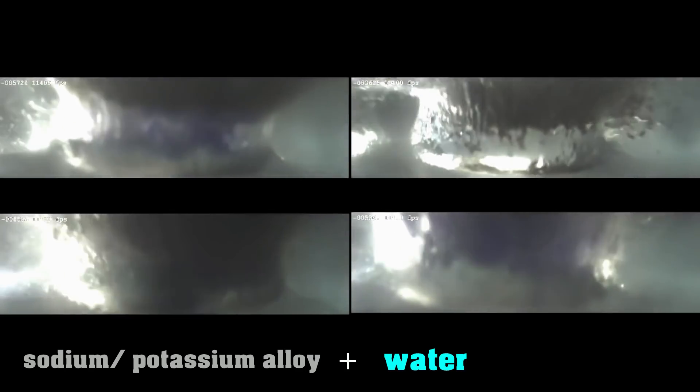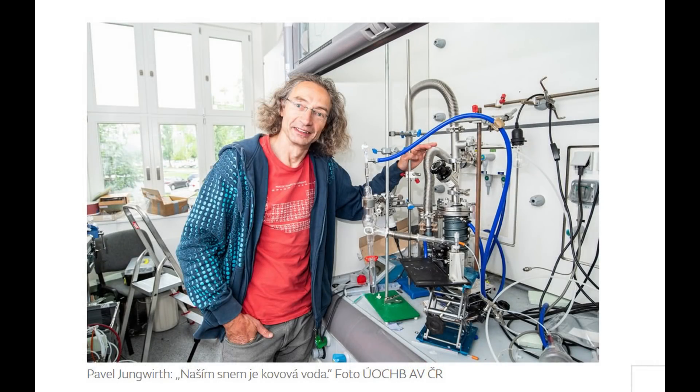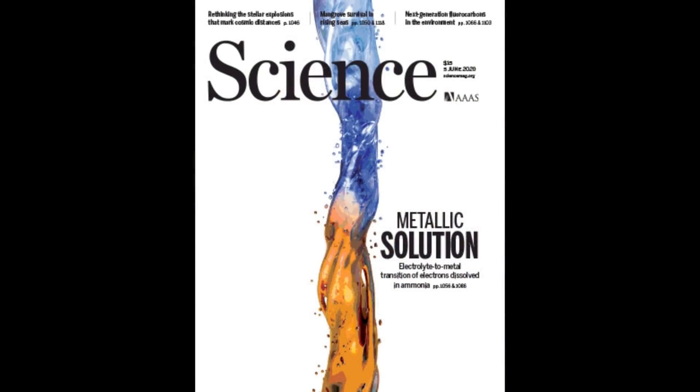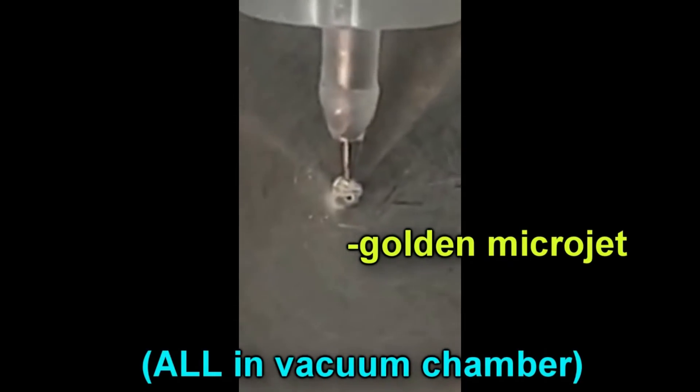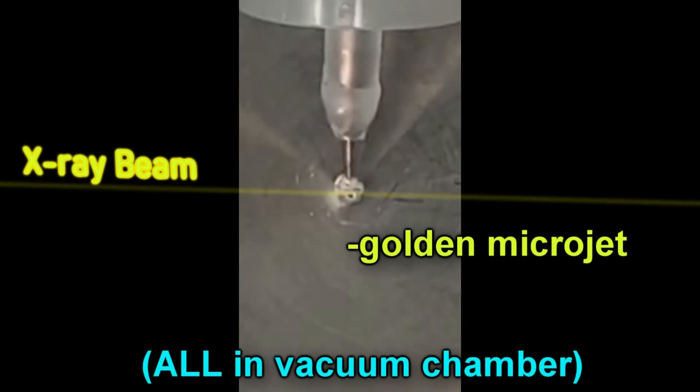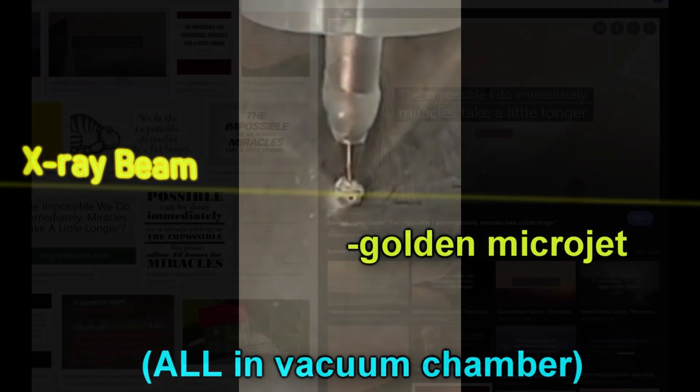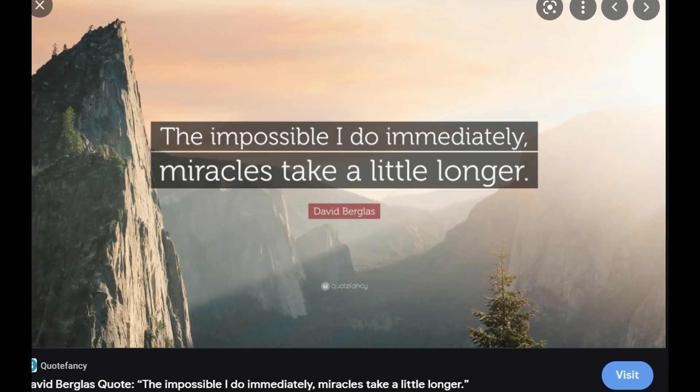So it was that one Pavel Jungwirth came to me with a really good idea. Seeing as we together had had all this success measuring the photoelectron spectrum of solvated electrons in ammonia, he said, why don't we do that with water? And my response was fairly quick and simple: that's impossible.